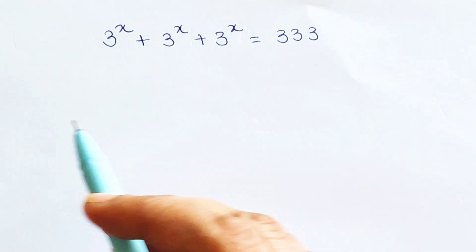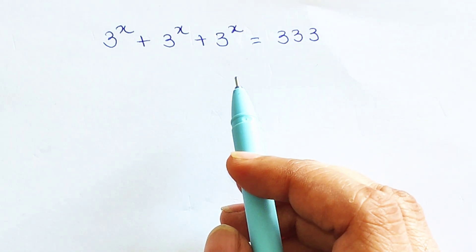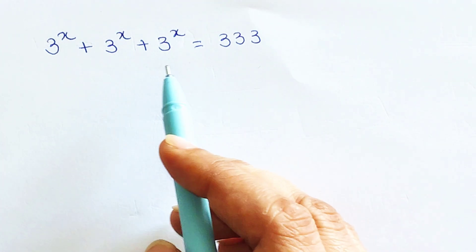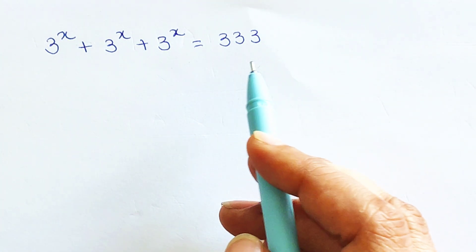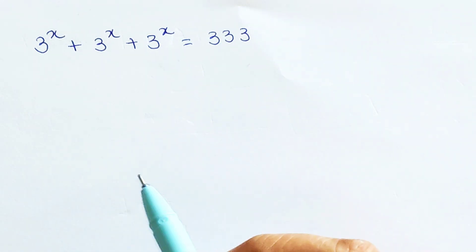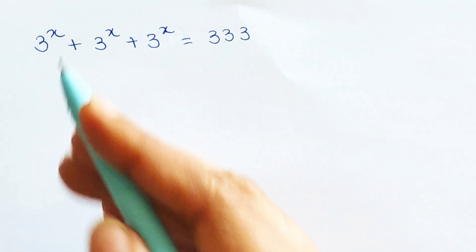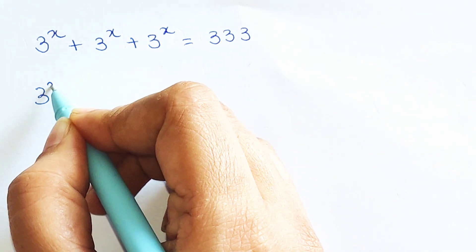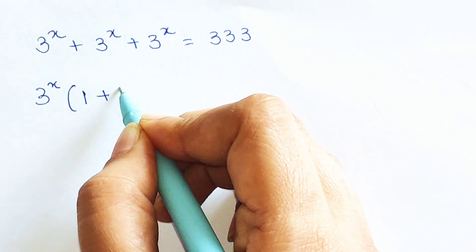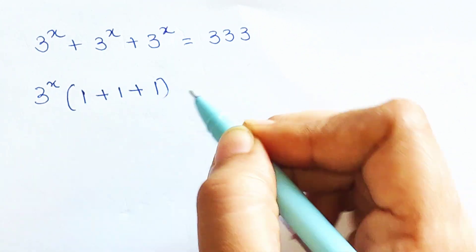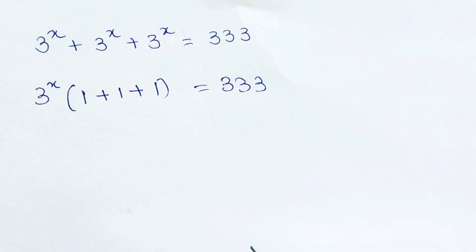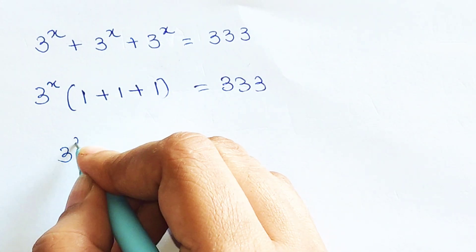Welcome everyone. Today we are going to solve a very nice indices problem. The question is: if 3 raised to x plus 3 raised to x plus 3 raised to x equals 333, then what is the value of x? First, what we can do is take 3 raised to x common, and we are left with 1 plus 1 plus 1 on the LHS, keeping the 3 raised to 33 as it is.